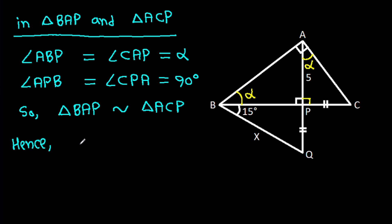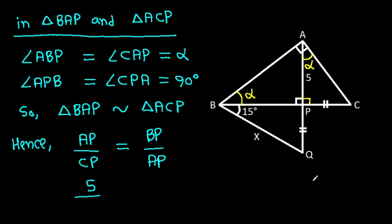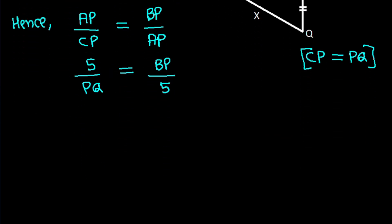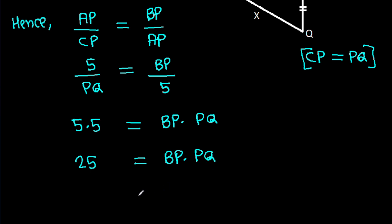Hence AP over CP equals BP over AP. AP is 5, and CP is equal to PQ. So 5 over PQ equals BP over 5. Cross multiplying, 5 times 5 equals BP times PQ. And 25 equals BP times PQ. So BP times PQ is 25.